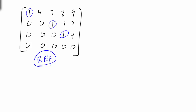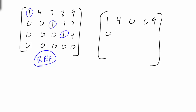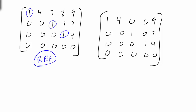Is this in reduced row echelon form? No. For reduced row echelon form, we'd need zeros above each leading 1. For example, modify the matrix so row 1 becomes 1, 4, 0, 0, 9; row 2 becomes 0, 0, 1, 0, 2; row 3 becomes 0, 0, 0, 1, 4; and all zeros at the bottom. Now above each leading 1 we have a 0, so this is reduced row echelon form.